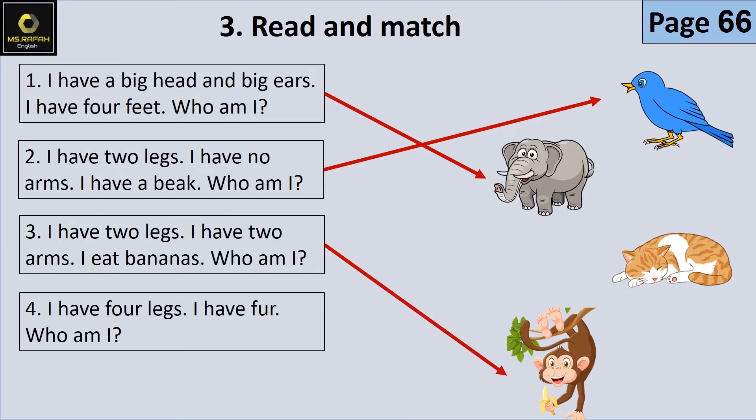I have four legs — لدي أربع أقدام. I have fur — لدي فرو. Who am I? A cat.